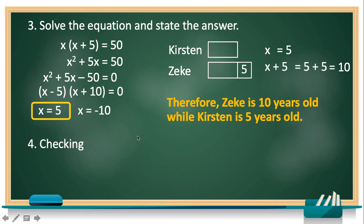Finally, let's check and verify our answer. Let's get again our equation. X times X plus 5 is equal to 50. Then let's substitute our answer to the variables. So X is 5 and X plus 5 is 10. So 5 times 10 is equal to 50. So it proves that our answers are all true.